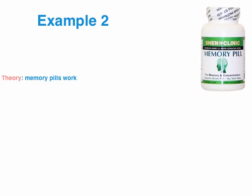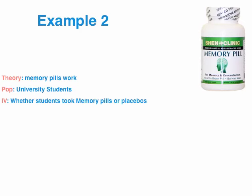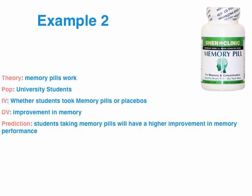Here's another example: memory pills — you can buy these at the chemist. The theory is that these work, but in its current form that's not testable, so let's narrow it down. Population: due to working with minors, let's test these on university students. IV: we're going to get half of the university students to take the memory pills, and the other half to take placebos — we'll use some deception, and we'll presume the ethics committee approves. DV: their improvement in memory, from before they took the pills until after. Prediction: students who take the pills will have more improved memory performance than students who don't.